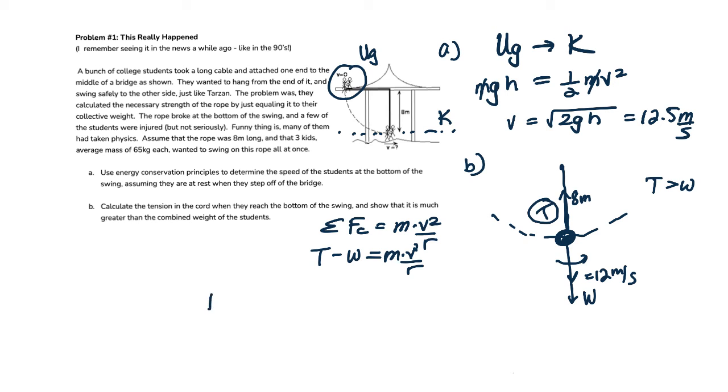Let's plug in our numbers. T minus the weight, which is, I'll calculate that over here, 65 kilograms times 9.8 meters per second squared times 3 for the students is 1,911 newtons. That's quite a bit of weight.